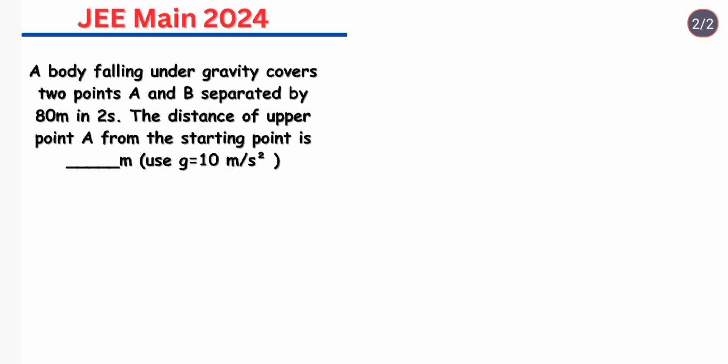The body falling under gravity covers the two points A and B separated by 80 meter in 2 seconds. So first of all let's draw this. Say this is our point A and this is our point B and this distance is separated by 80 meter and the time taken to cover this distance is 2 seconds.